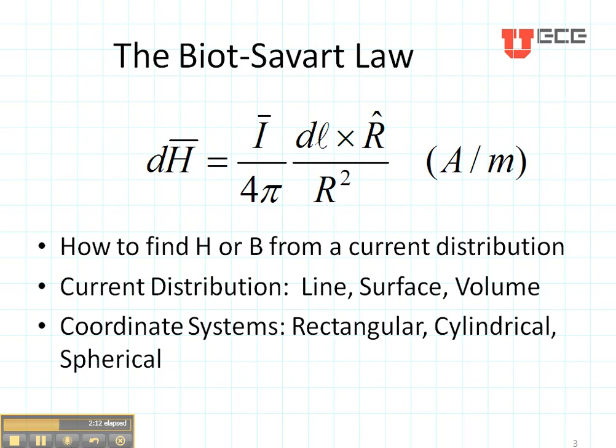This is the Biot-Savart Law. It says that the magnetic field H is equal to the current I crossed with a vector R-hat divided by 4π times R squared. If we have a current going in this direction, I...